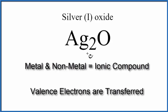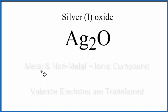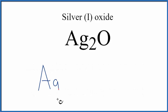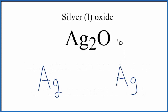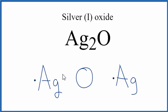So we have two Ag atoms — we'll put one here and then one over here, and then we'll put the Oxygen in the middle. Silver has one valence electron, and Oxygen, which is in group 16, sometimes called 6A, has 6.